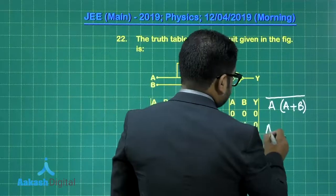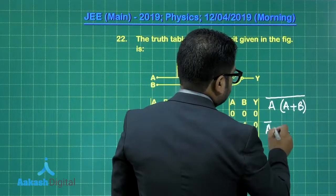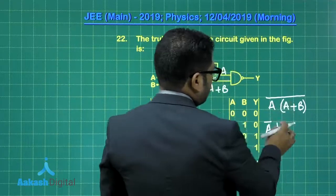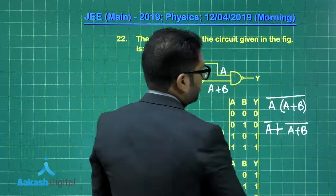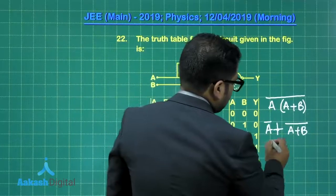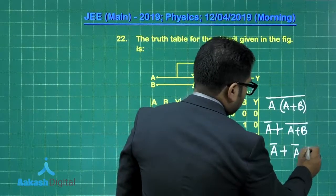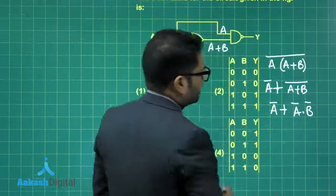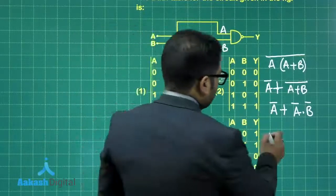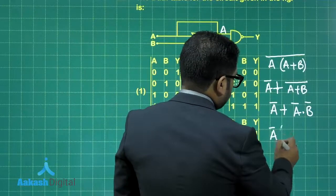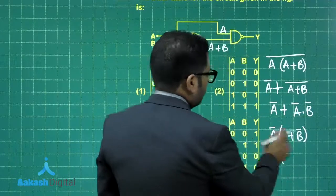Applying De Morgan's theorem — break the bar and change the sign — the dot becomes OR, giving Ā OR (A + B). Further expanding, this gives Ā·B̄. Applying De Morgan's again, we take Ā as common using the distributive property, and the remaining factor simplifies to 1.